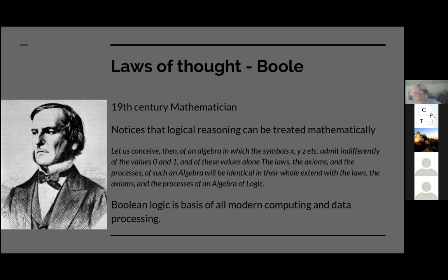He says, let's conceive of an algebra where the symbols X, Y, Z, et cetera, admitted indifferently the values 0 and 1, and these values alone. The laws, the axioms and the processes of such an algebra will be identical in their whole extent with the laws, axioms and processes of an algebra of logic. So he's establishing an equivalence between what had previously been seen as two distinct disciplines, that of logic and thought, and that of arithmetic. And of course, the logic he invented, the Boolean logic, is the basis of all modern computing and all data processing subsequently. So insofar as correct ideas are proven by practice, he clearly had the correct ideas.